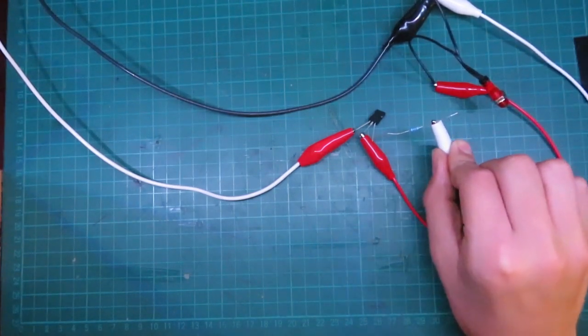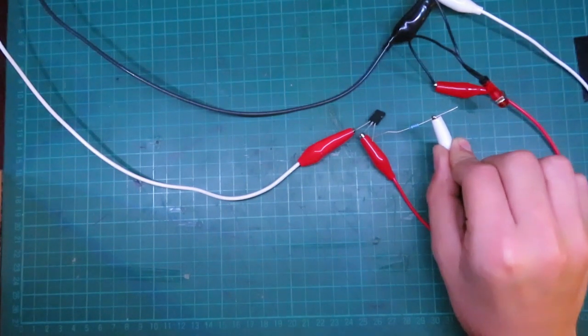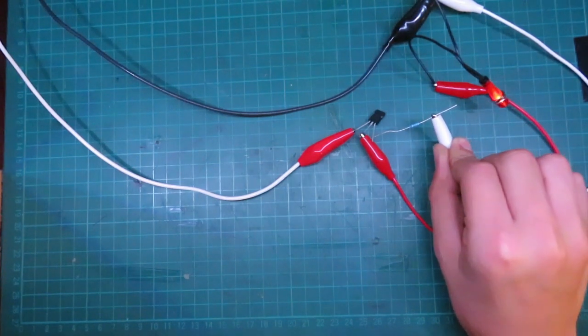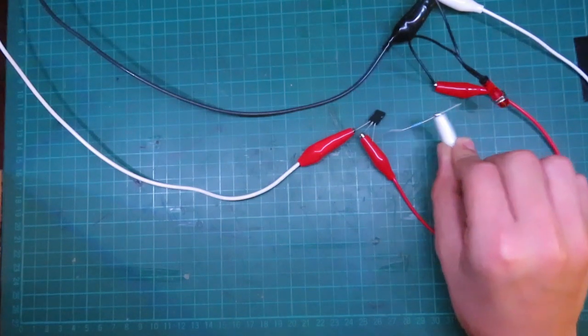And, let's apply a signal to the gate. And there you go. You can see the light bulb is coming on. And you can also see, as soon as it lets go, the light bulb turns off.